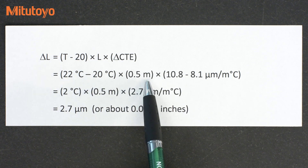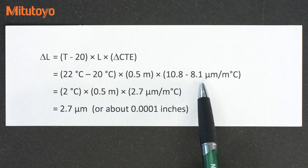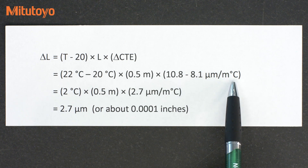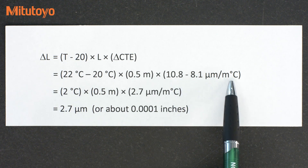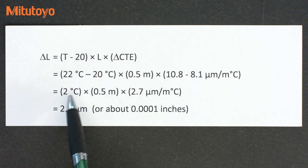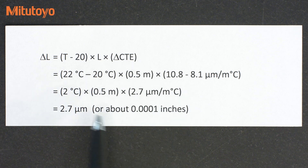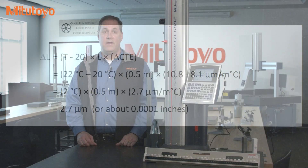The two different CTEs are: the gauge block at 10.8 and the scale for the linear height at 8.1, in microns per meter per degree C. So that's all the numbers we need, and we can do some simple math. The 22 minus 20 gives 2, times half a meter, times the CTE difference of 2.7 microns per meter per degree Celsius. That comes out to 2.7 microns — which, if you prefer inches, is about 10 thousandths of an inch.